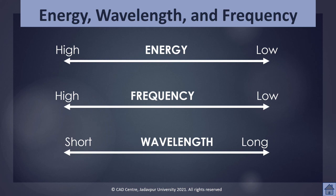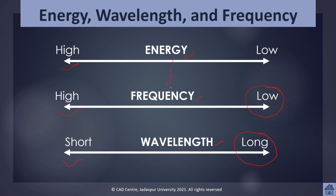This chart shows the relationships between energy, frequency, and wavelength. For higher energy, the frequency will be high and the wavelength will be shorter. For a lower amount of energy, the frequency will be lower and the wavelength will be longer. So energy and frequency are directly proportional, while frequency and wavelength — and energy and wavelength — have inverse relationships.